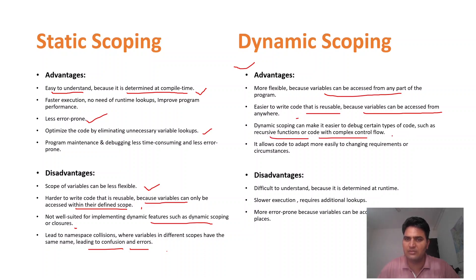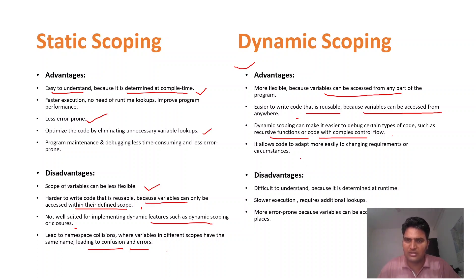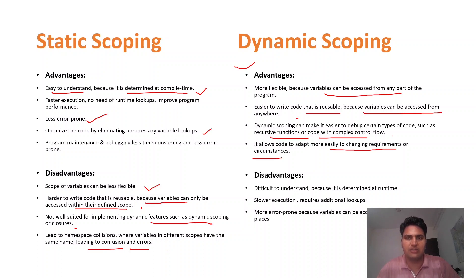In recursive functions, we call other functions, so in that case the variable is accessible and you can track the value of the variable. Dynamic scoping allows code to adapt more easily to changing requirements and circumstances. If a call is decided at runtime, it also allows that and fulfills the requirement. That is why it is considered better in certain situations compared to static scoping.